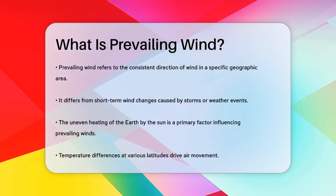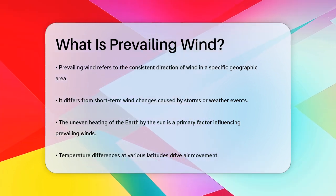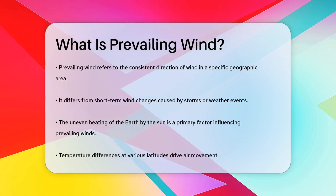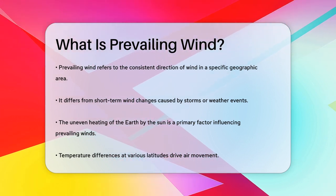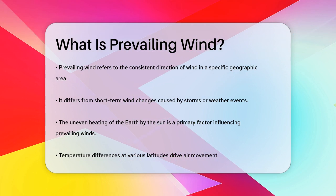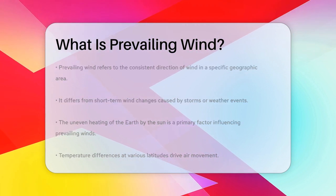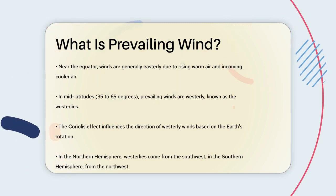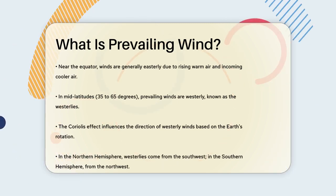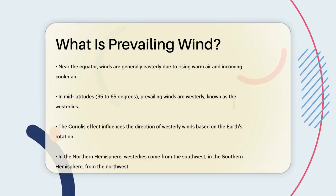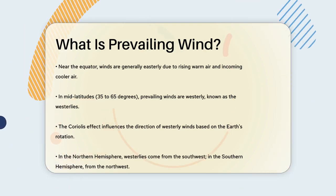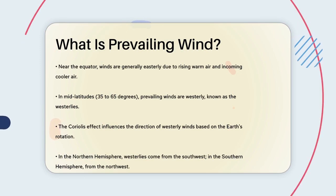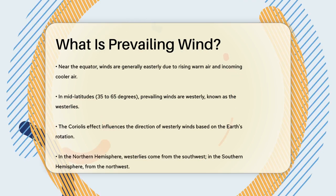One of the main factors that cause prevailing winds is the uneven heating of the earth by the sun. The sun's rays hit the earth differently at various latitudes, creating temperature differences that drive air movement. In low latitudes, near the equator, the winds are generally easterly, meaning they blow from the east. This is because the warm air rises near the equator and cooler air moves in to replace it, creating a circulation pattern.